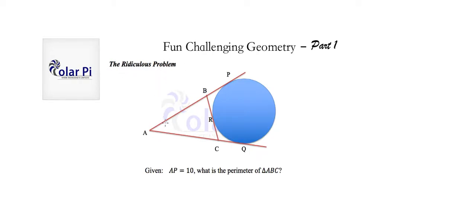You're given that the length from A to P is equal to 10, and you're asked to find the perimeter of triangle ABC. You also know that Q, R, and P are points of tangency.